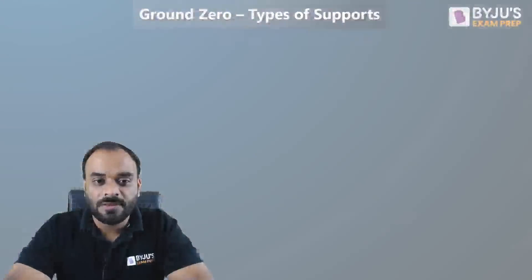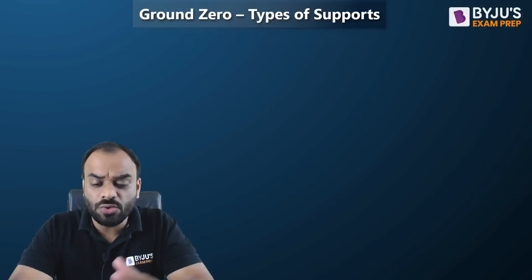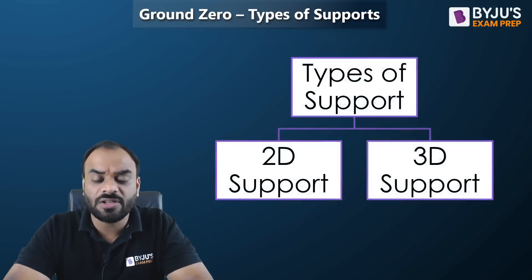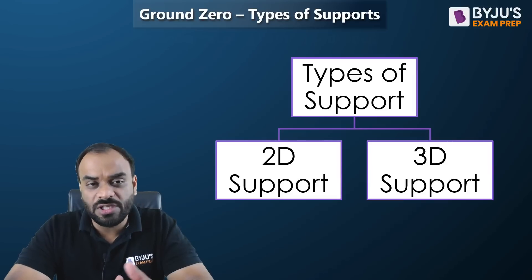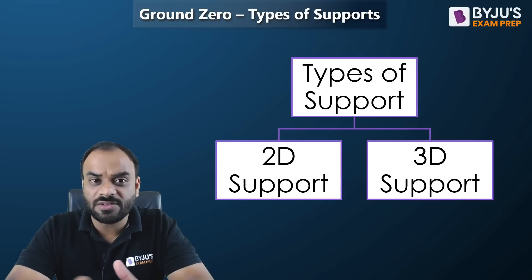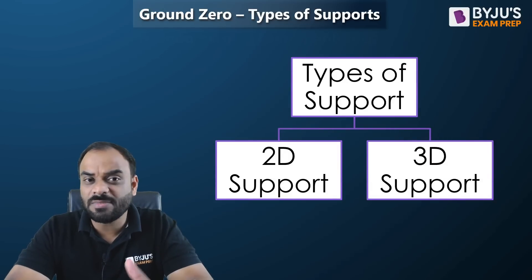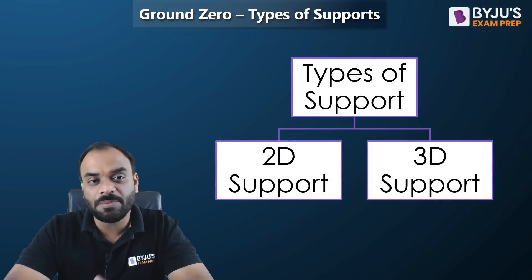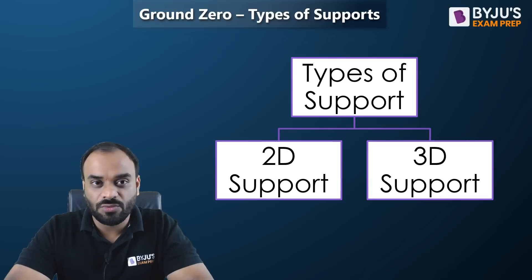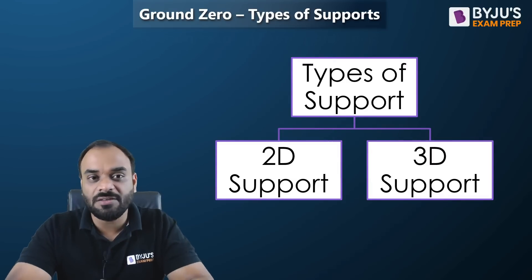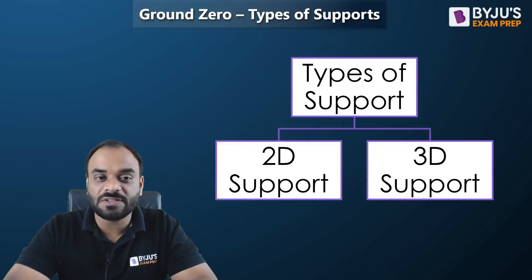First, there are two types of support conditions: 2D and 3D. If the forces are present on a single plane, it is known as a 2D support condition — it doesn't matter whether the support itself is physically 2D or 3D in shape. What matters is the type of forces. If the forces lie on a single plane, that is a 2D support condition. If the support is 3D, the forces are present on multiple planes.